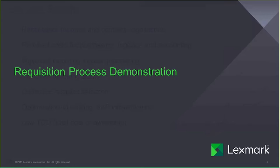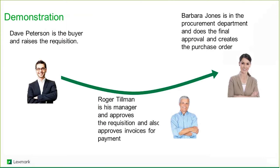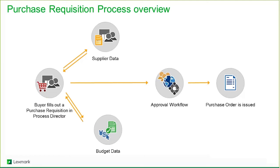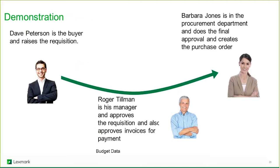Let's look at a real-life example of Process Director with requisitions. We'll drill down into the requisition process using a persona-based example to illustrate the steps that can be implemented to assure optimal automated processing. As a reminder, the process begins with a requisition, which is validated through the supplier and SAP accounting, then approved, and finally the purchase order is issued.